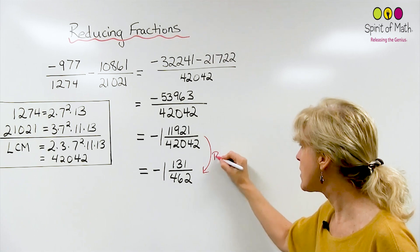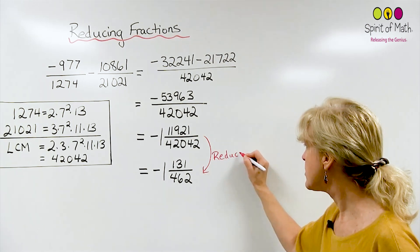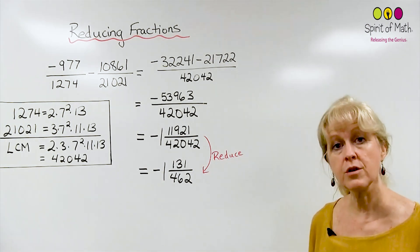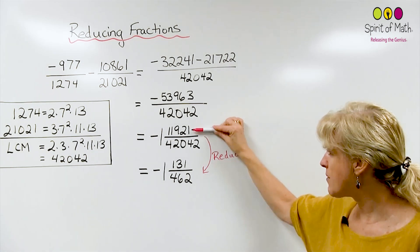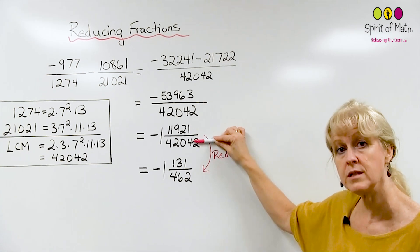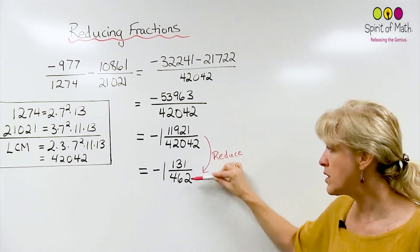Going from here to here is what you call reducing the fraction. By reducing the fraction, it means find the common factors that are in both of these that will divide out so that you've got